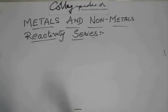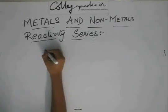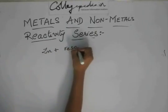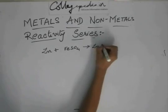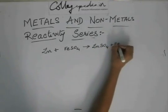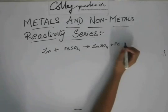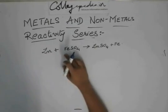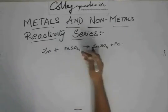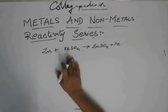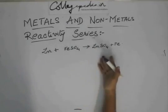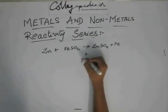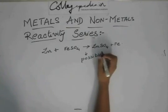Similar questions can be asked, like: Zn + FeSO₄ → ZnSO₄ + Fe. Is this reaction possible? You check the reactivity series and find that zinc is above iron, so zinc has the ability to displace iron from its salt. It is displacing iron in this reaction, so the reaction is possible. You also have to give the reason here.